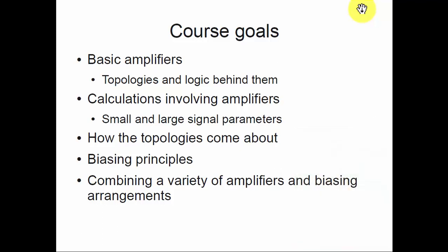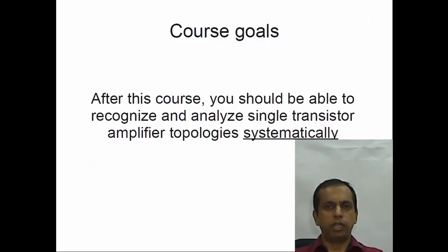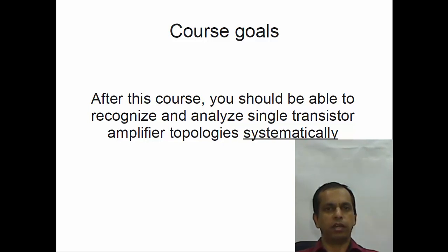We will also look at biasing principles — different ways of setting up operating points in a transistor and how to combine a variety of biasing arrangements with a variety of amplifiers. In short, if you learn things well, after this course you should be able to recognize and analyze any amplifier topology that you see, and the key word here is systematically. I do not mean memorizing some formula and somehow getting the right answer; you have to understand the logic behind the circuit, use whatever approximations are necessary, and come to the correct answer.